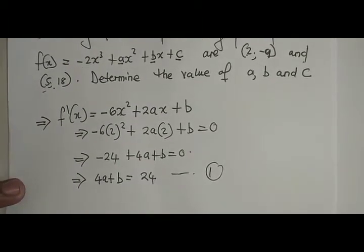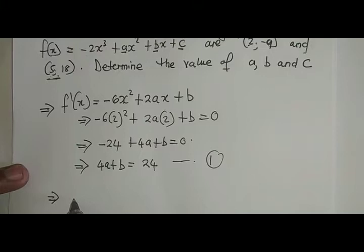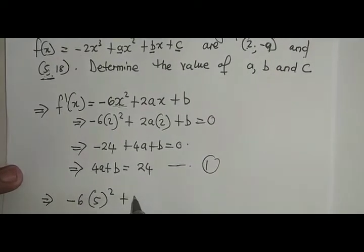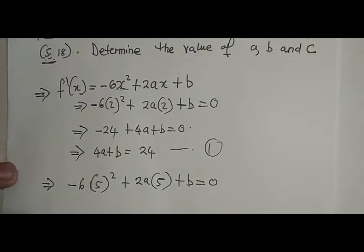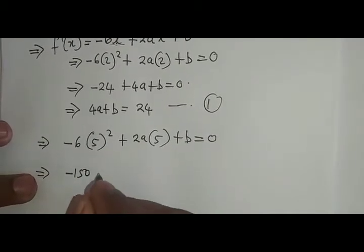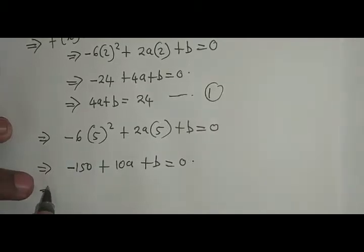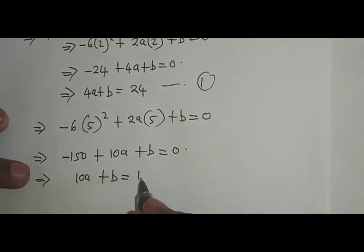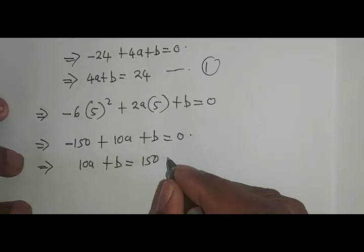For equation 2, we use the second turning point where x = 5. Substituting into f'(x): -6(5²) + 2a(5) + b = 0. Since this is a turning point, the derivative is 0. Simplifying: -150 + 10a + b = 0, which means 10a + b = 150. This is equation 2.